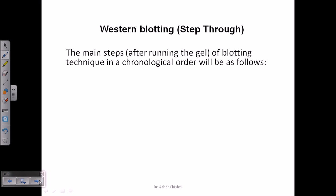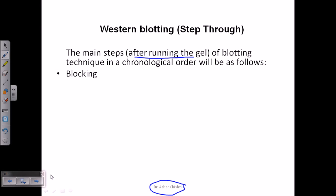The main steps of western blotting are only performed after running the gel. Blotting is not a self-sufficient process — we need to run a gel before blotting as a preliminary step. Western blotting is the most time-consuming of all blotting types; it will take almost four to five days to get the complete result.